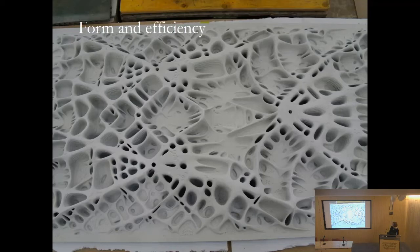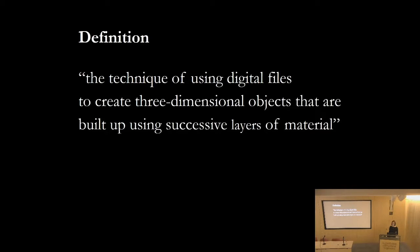On form and efficiency: there's a beautiful piece done at the University of Zurich. Even though it's beautiful, it's also really efficient — the form has been designed to only have material where you need it. If we can remove the amount of material we're using, we can create beautiful designs while also having less impact with the materials.